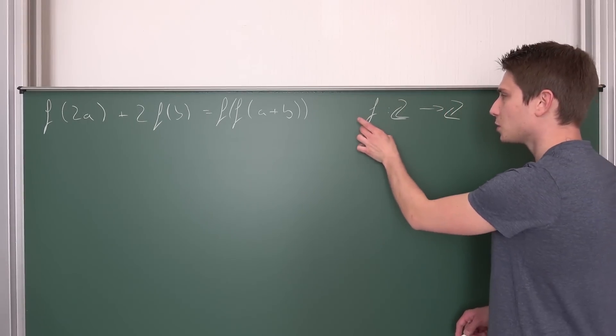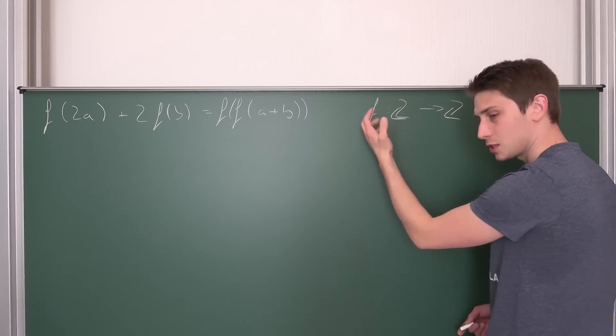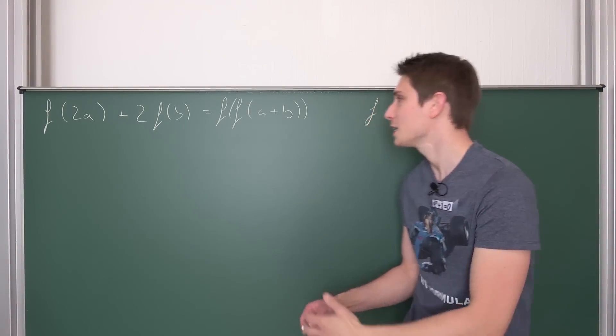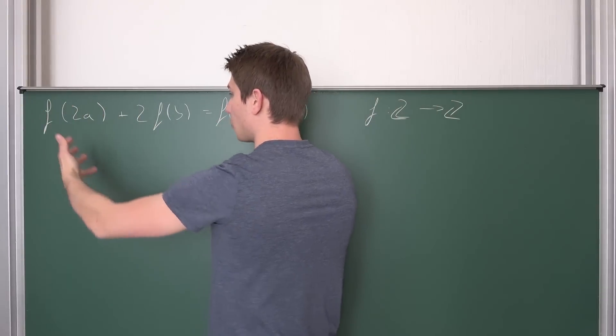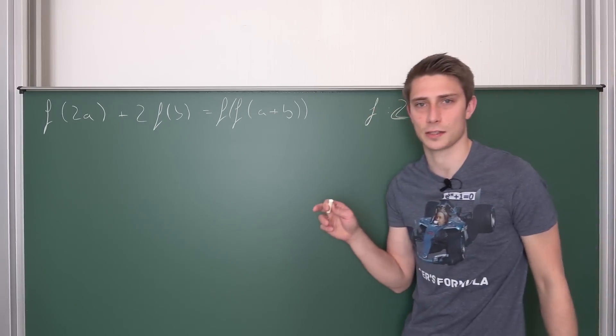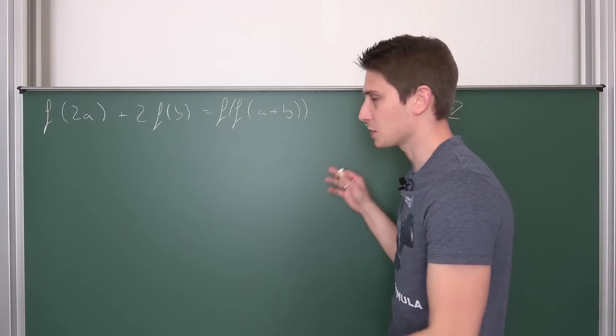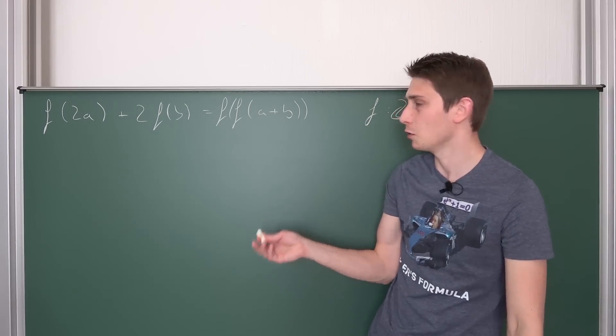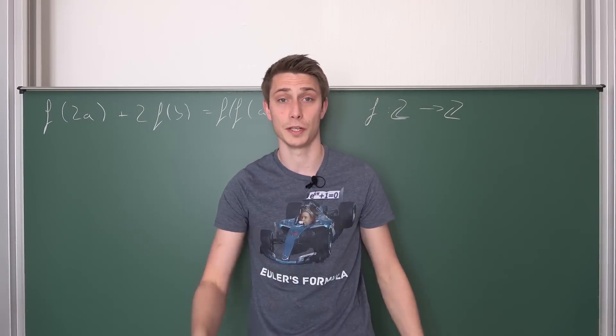We want to find functions that go from the positive and negative integers to the positive and negative integers that satisfy this formula right here, a and b obviously from the positive and negative integers. I believe it's some competitive problem, I don't know, you will find the details somewhere in the description or so.